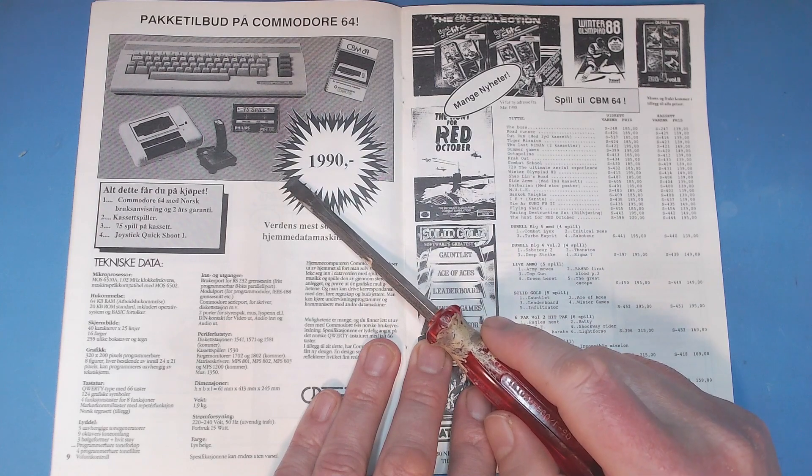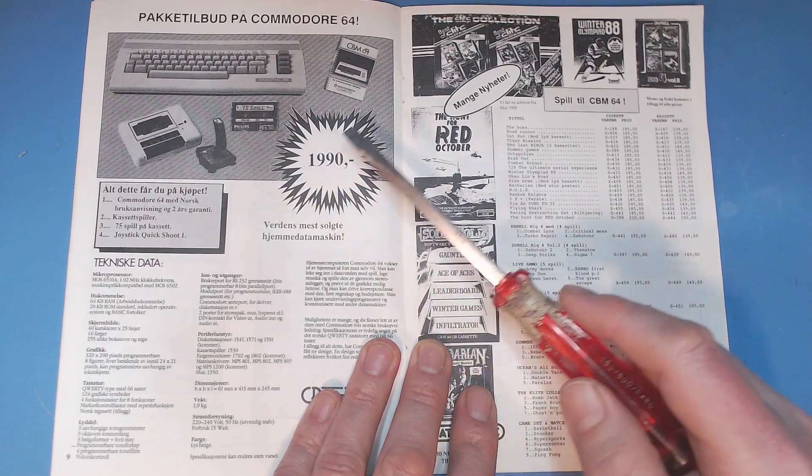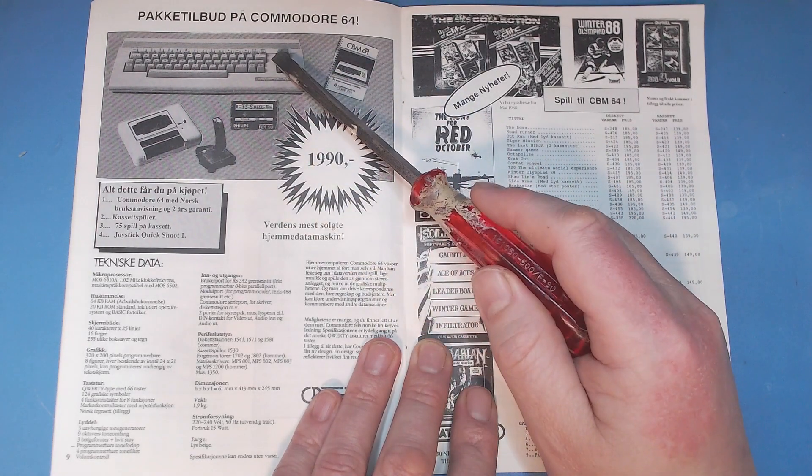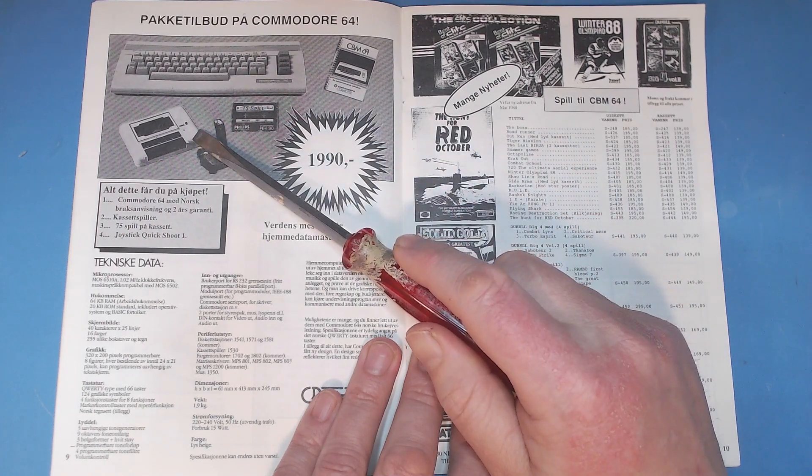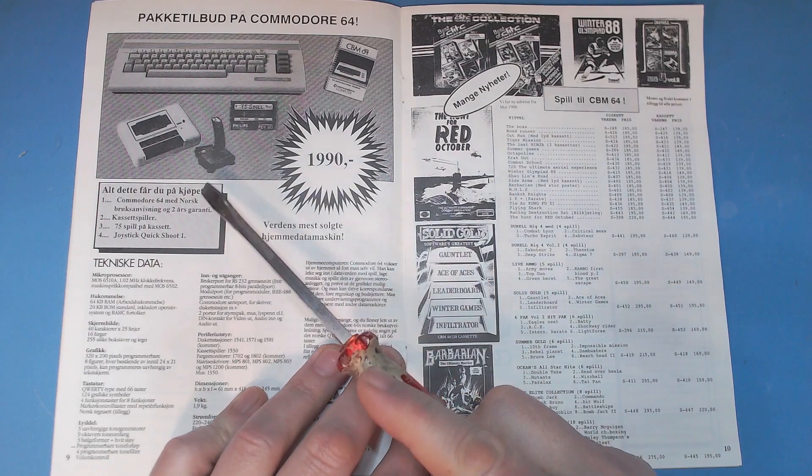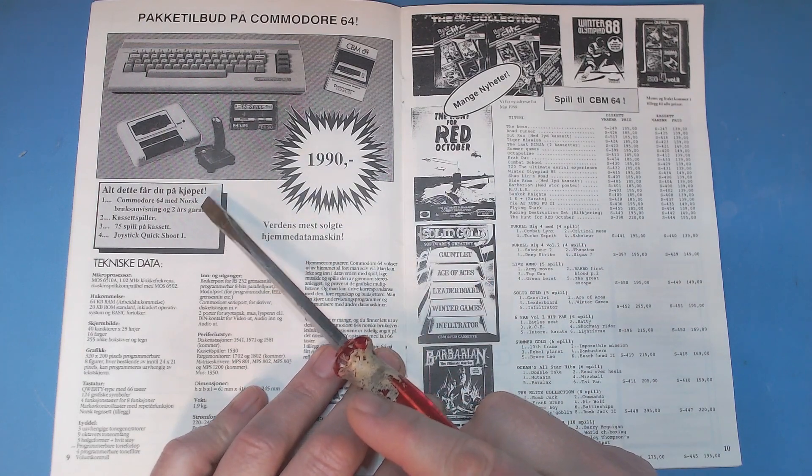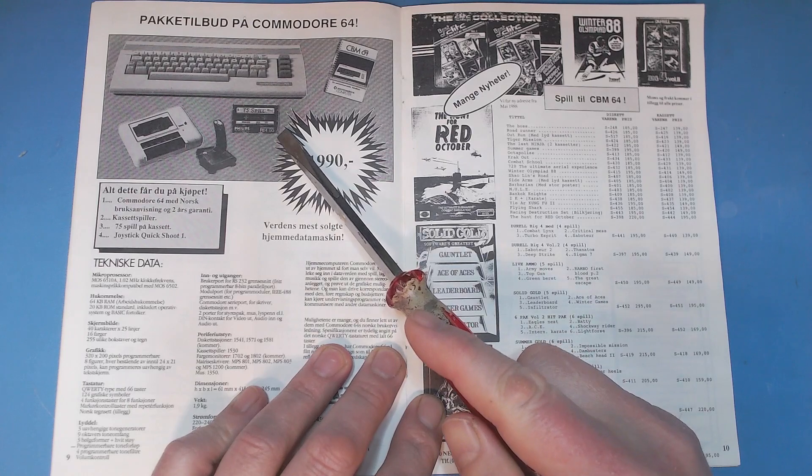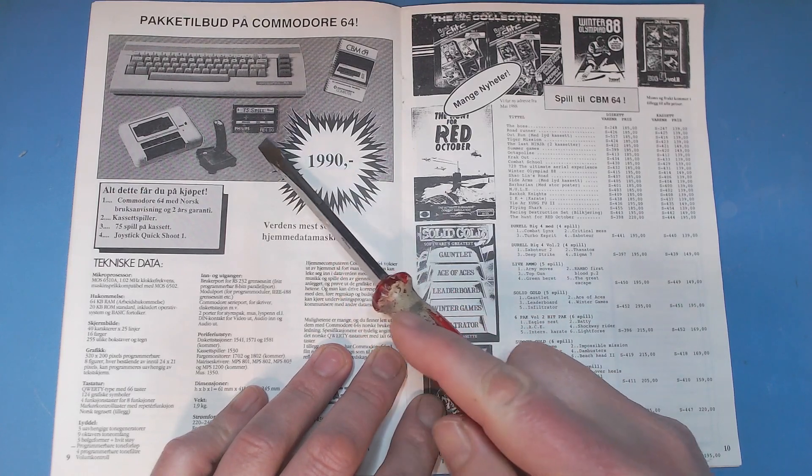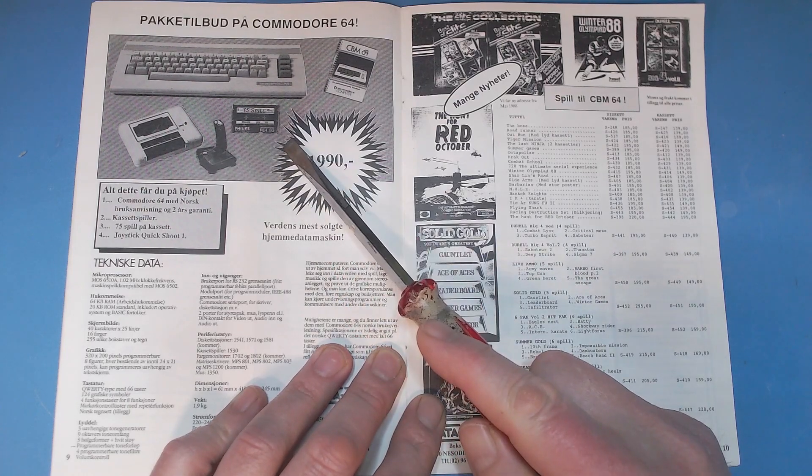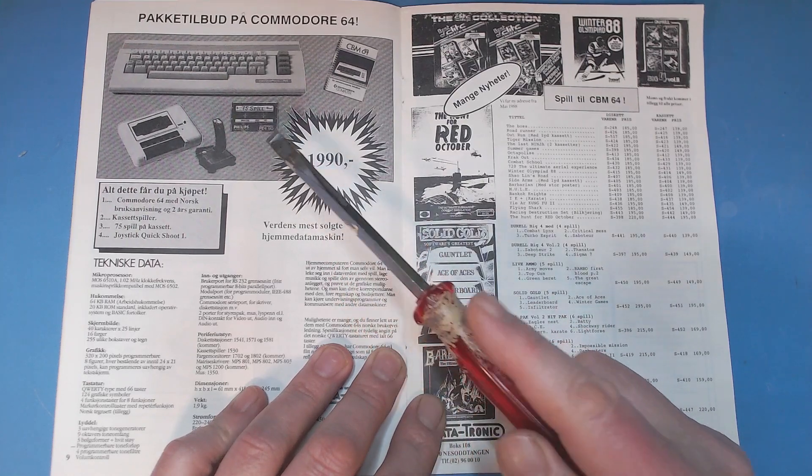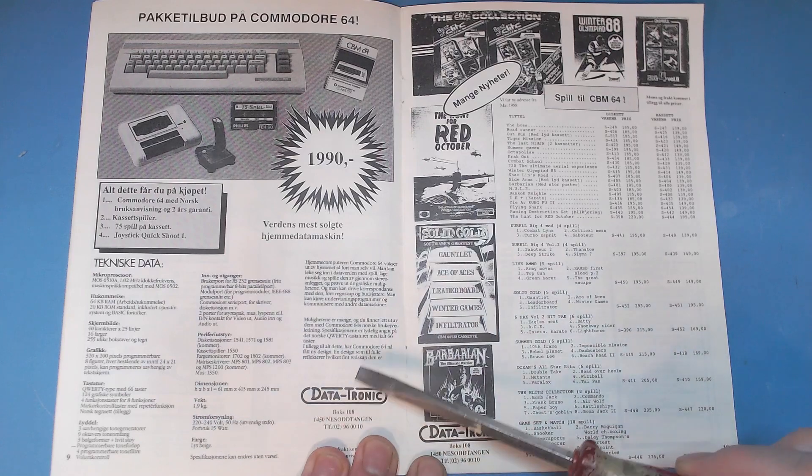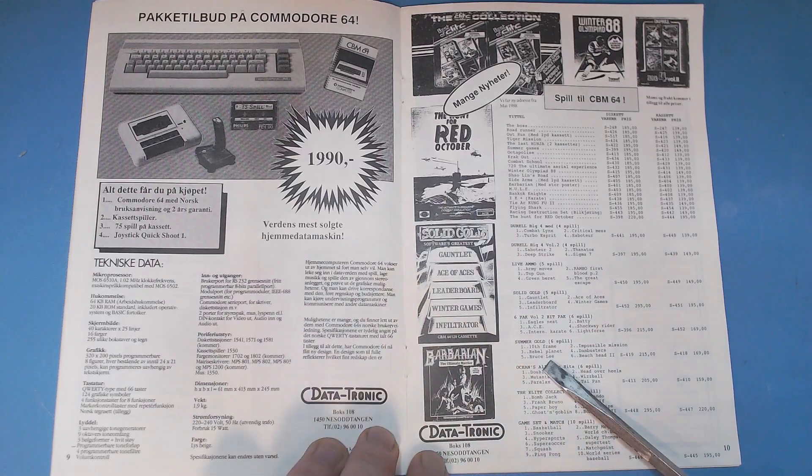Commodore 64 in 1988 in Norway: you got the base unit, the joystick, the cassette player, and also a tape with 75 games on a cassette. I know this looks a bit suspicious, but I don't think it was pirated software that was offered back in the day. The technical data for the C64 should be known to everyone.